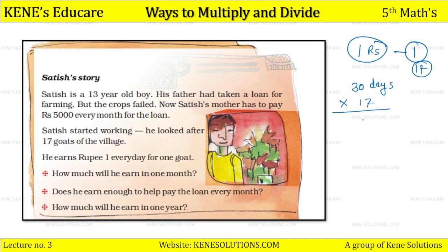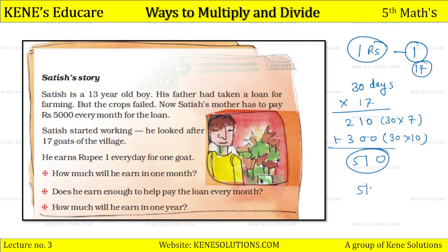First we multiply 30 by 7: seven threes are 21, so we get 210. Then 30 multiplied by 10 gives 300. Adding these together: 210 plus 300 gives 510 rupees. So Satish will earn 510 rupees per month for looking after the 17 goats.